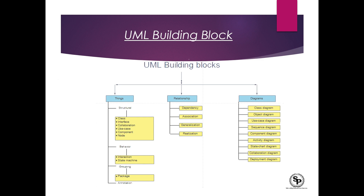UML building blocks consist of three types: things, relationships, and diagrams. Things consist of four types: structural things, behavioral things, grouping, and annotation. The second building block is relationship, which also consists of four types: dependency, association, generalization, and realization.